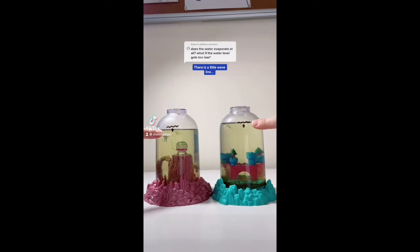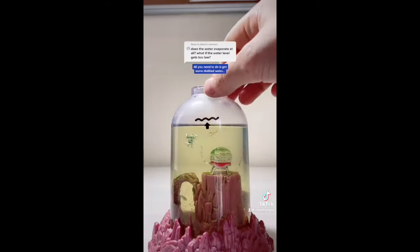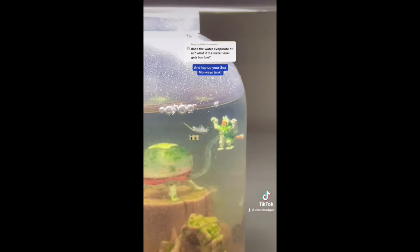At the back of your sea monkey tank there is a little wave line. When the water level drops below that line, all you need to do is get some distilled water, take the lid off the tank, and top up your sea monkey tank.